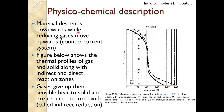The figure shows material descending downward while reducing gases move upward — essentially the blast furnace is a counter-current reactor. Counter-current means the solid comes down from the top while gases go up, facing each other in opposite directions.